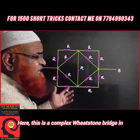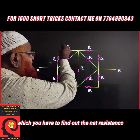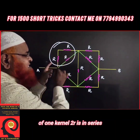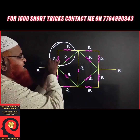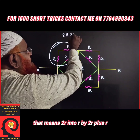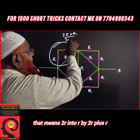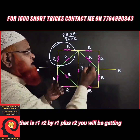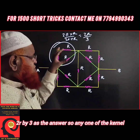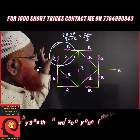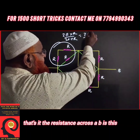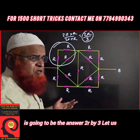Here, this is a complex Wheatstone Bridge, in which you have to find the net resistance of one arm. 2R is in series and it is in parallel with R. That means: 2R × R / (2R + R), which is R1·R2 / (R1 + R2). You will get 2R/3 as the answer. So any one arm gives the answer — the resistance across AB is 2R/3.